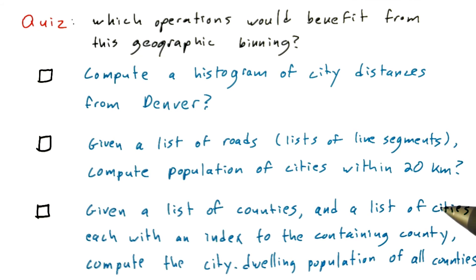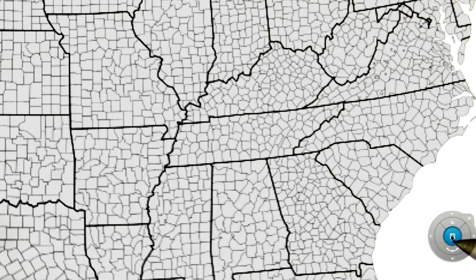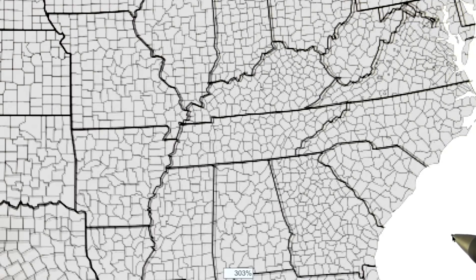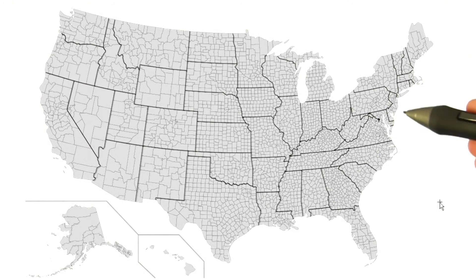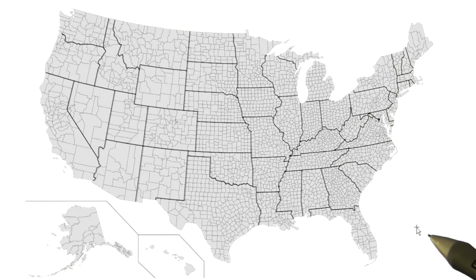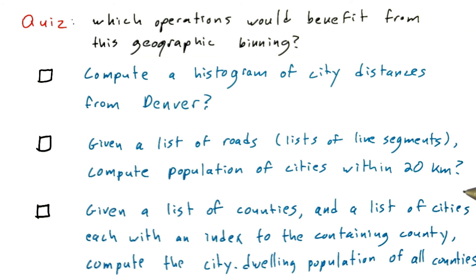Most U.S. cities are in geographic administrative divisions called counties. To give you a sense of what a county is, I've pulled out the Wikipedia map of U.S. counties and zoomed in to show some counties in our states. As you can see, there are thousands of counties — about 3,000 across the U.S. So, given a list of counties and a list of cities, each containing an index to its containing county, what if you needed to compute the city-dwelling population of all counties? Would this geographic binning operation help?